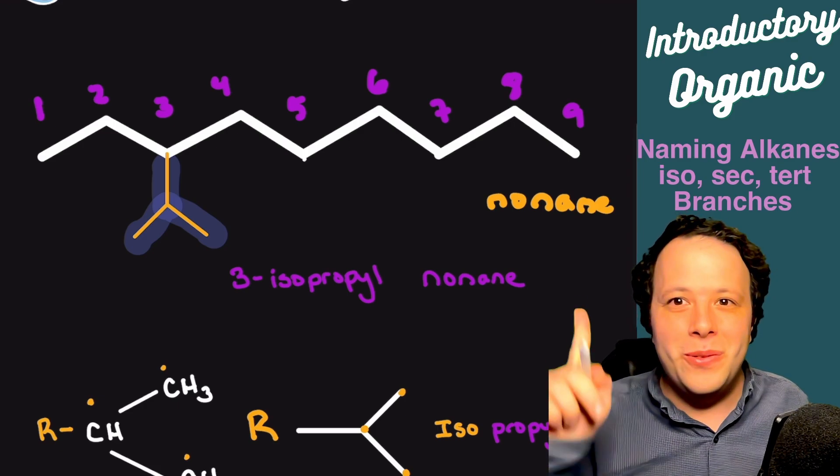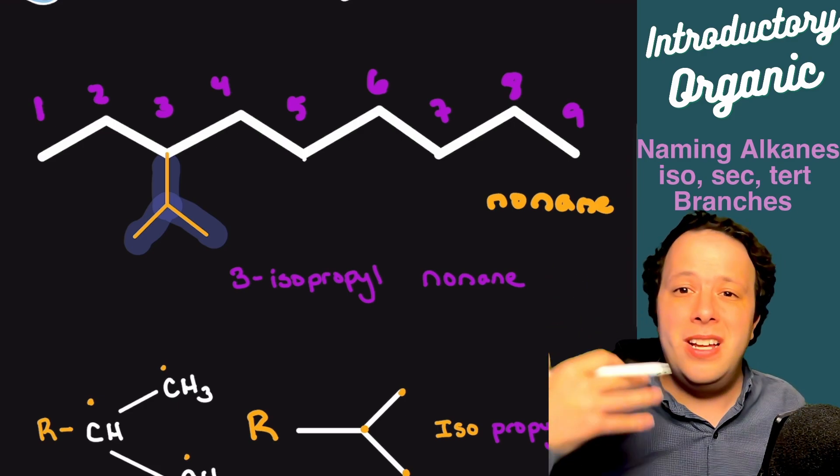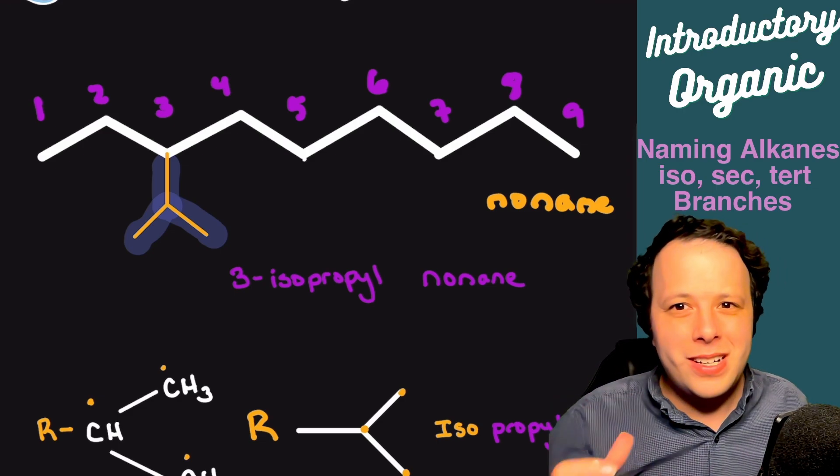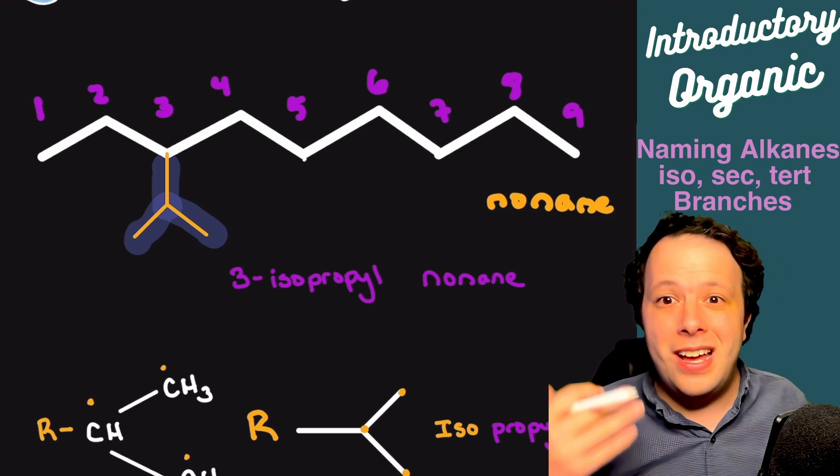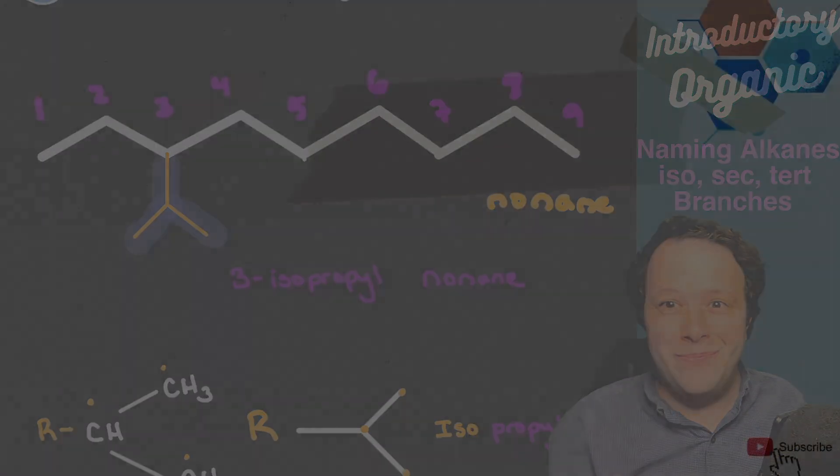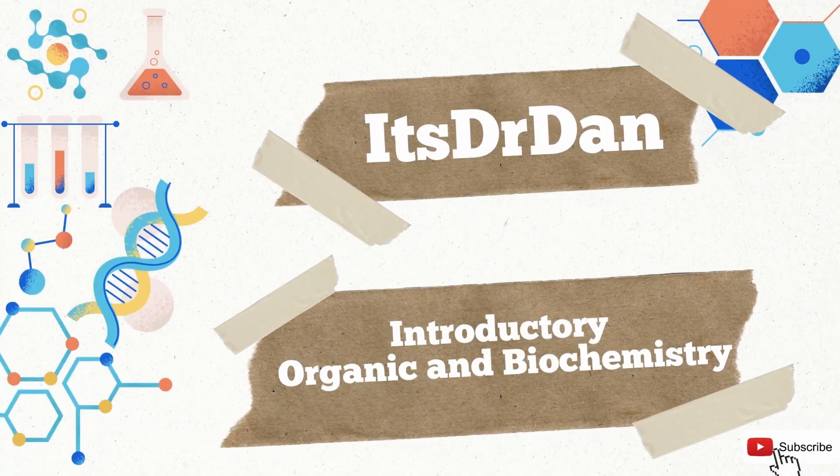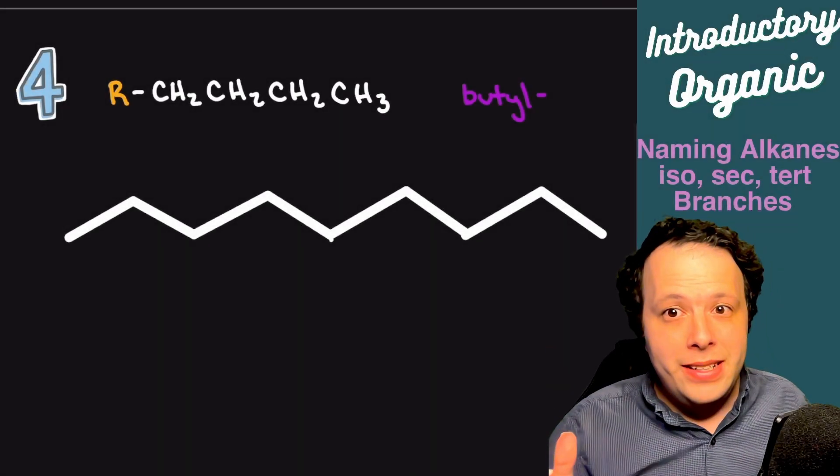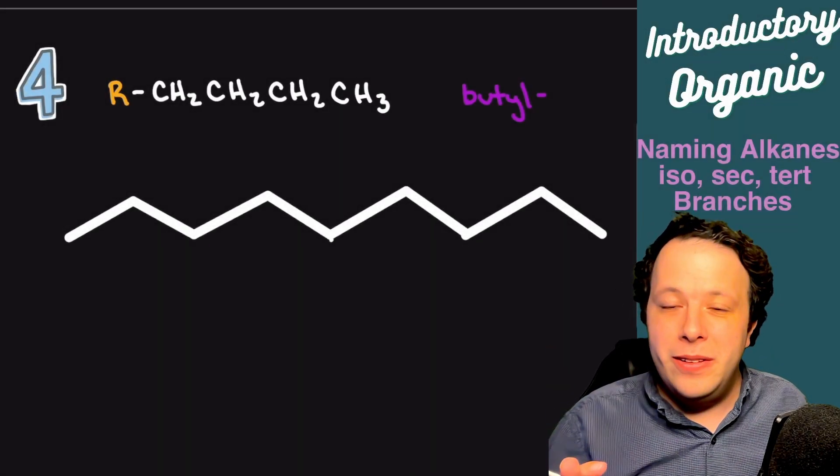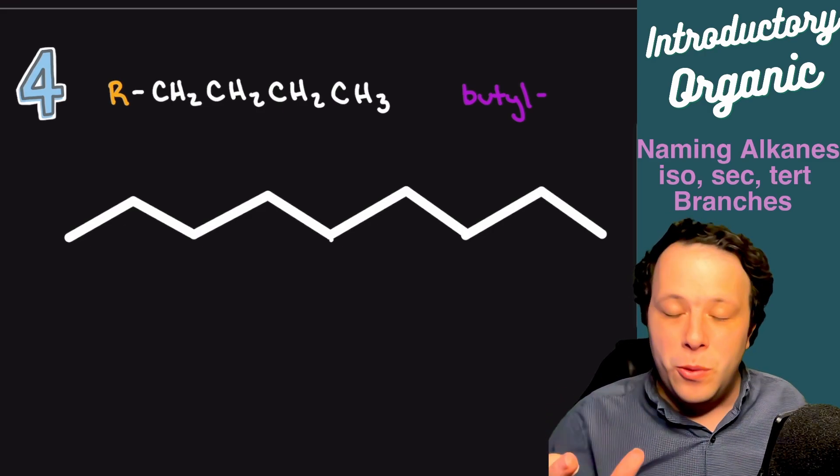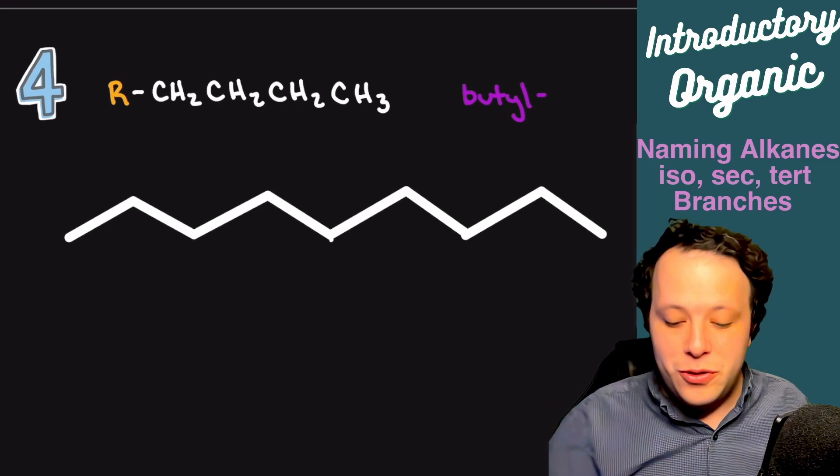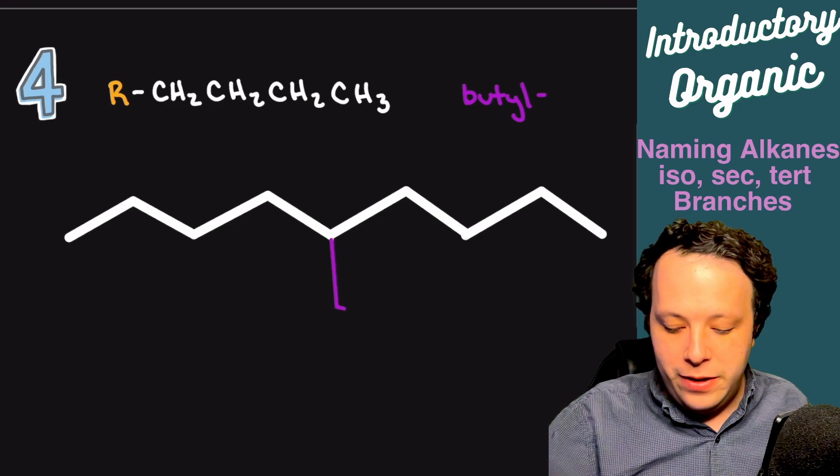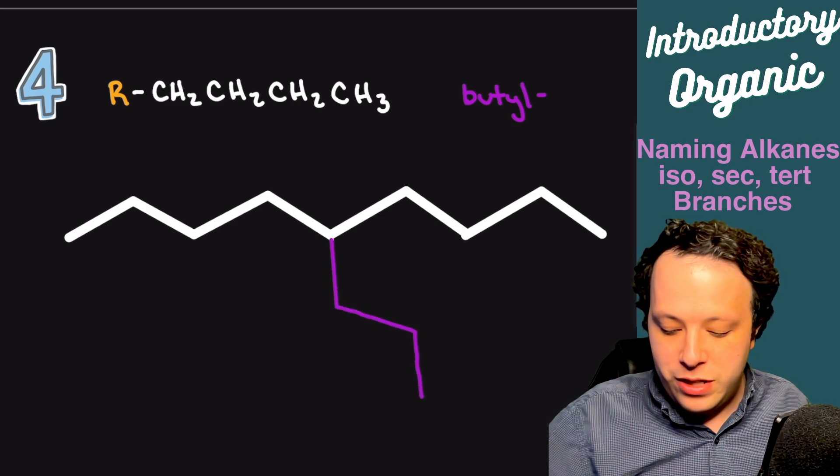Now is that the only one? I mentioned at the beginning it was propyls and butyls both have them, and also pentyls as well, but we're not going to do that in this particular video. Let's take a look at butyls specifically. When it comes to butyls, same idea. They really need to be in the middle of the chain because a butyl group is four carbons long, so it's really easy for it to redefine a chain.